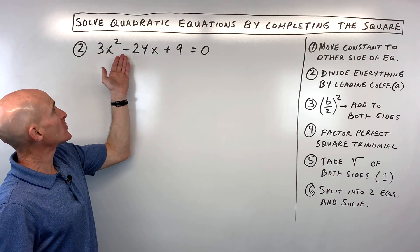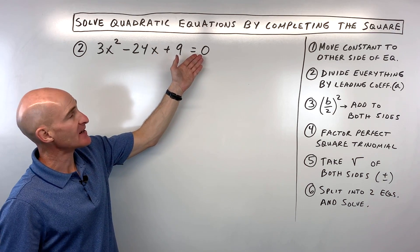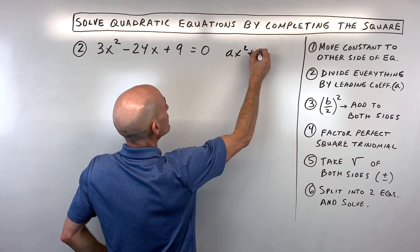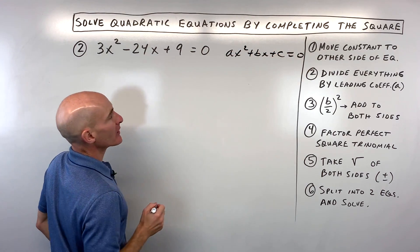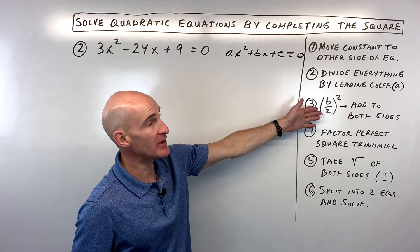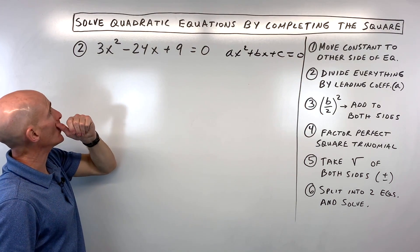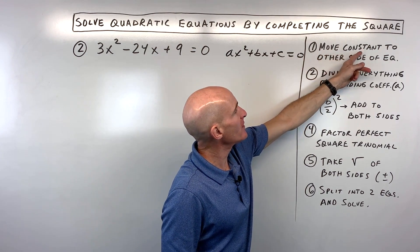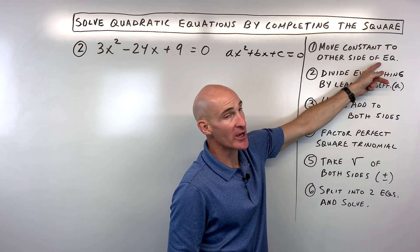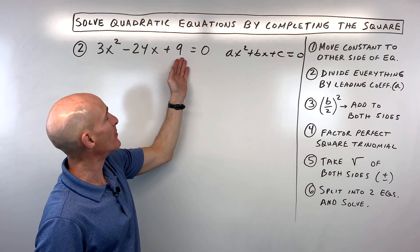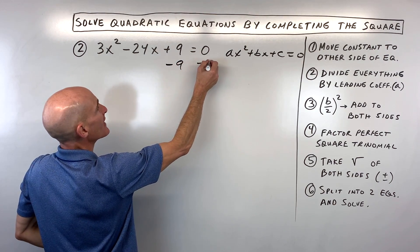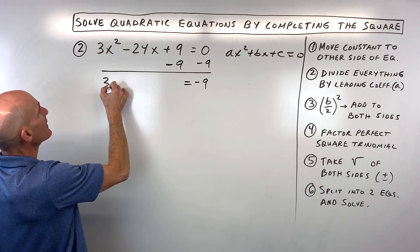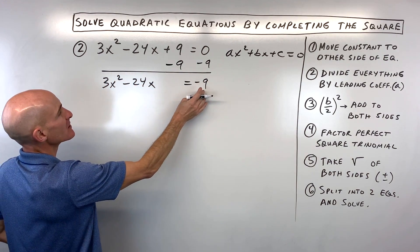For example 2, we have 3x squared minus 24x plus 9 equals 0, in the form ax squared plus bx plus c equals 0. Step 1: move the constant to the other side. The constant is the c value — just this number — so we subtract 9 from both sides to keep the equation balanced, leaving 3x squared minus 24x equals negative 9.